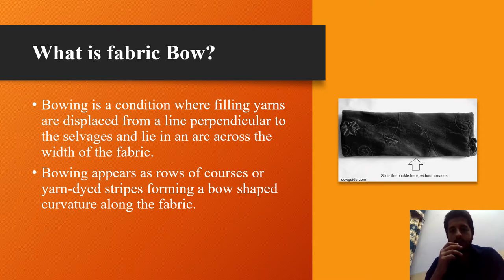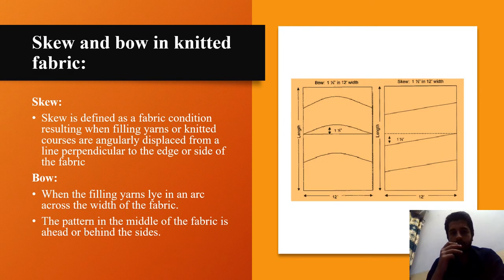Bowing appears as rows of course yarn dyed stripes forming a bow-shaped curvature along the fabric. In knitted fabric, skewing is a similar condition in which filling yarns are angularly displaced from a line perpendicular to the edge or side of the fabric.